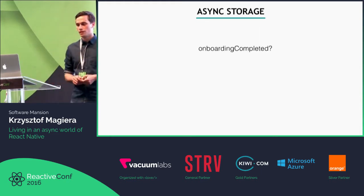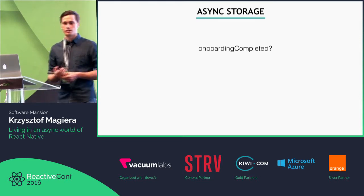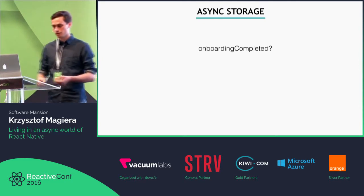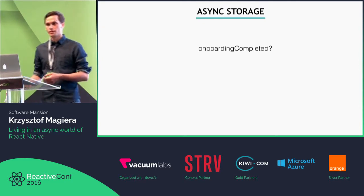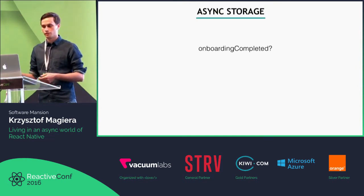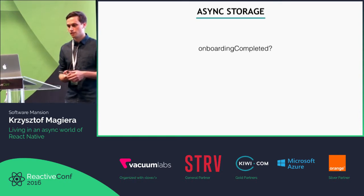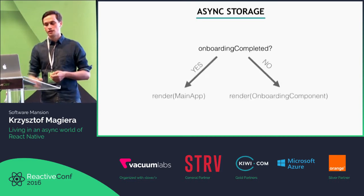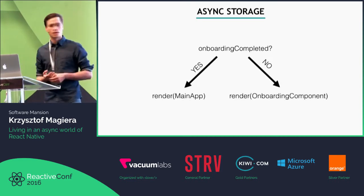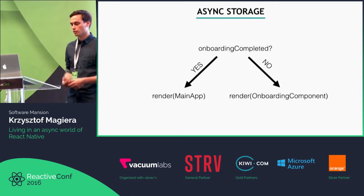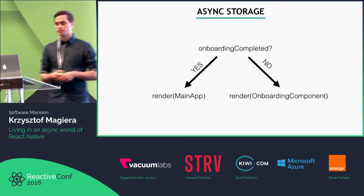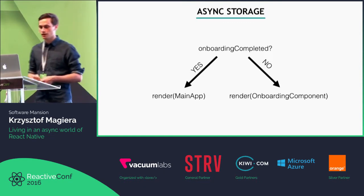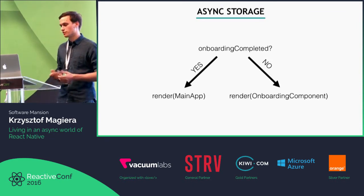Let's start with a simple example — async storage. Imagine you want to build an app that gives a user a nice onboarding experience. Whenever they launch the app for the first time they see the onboarding screen, and if they've already gone through the onboarding they can go straight to the main app. You'll have a variable stored in async storage that you read at the beginning and then decide whether to render the main application or the onboarding component. There's no synchronous version of the local storage API in React Native because of the asynchronous nature of the bridge.